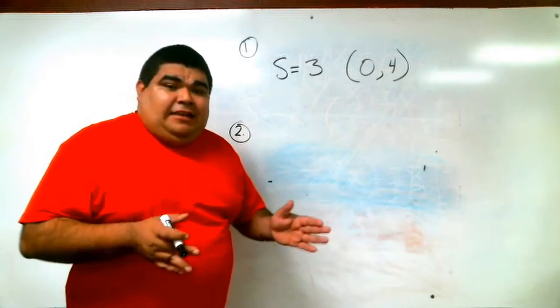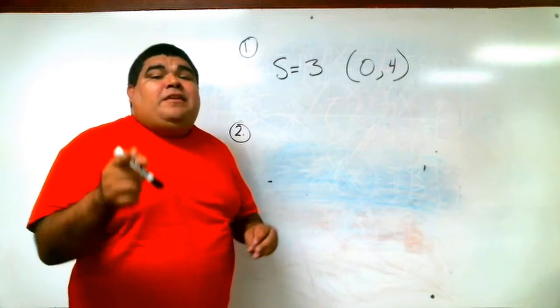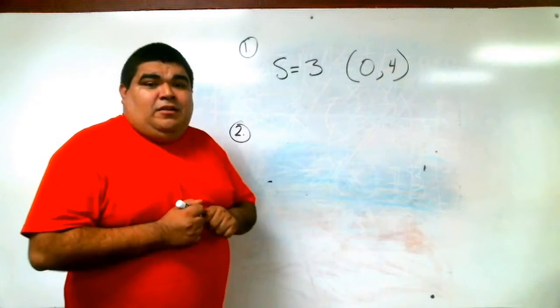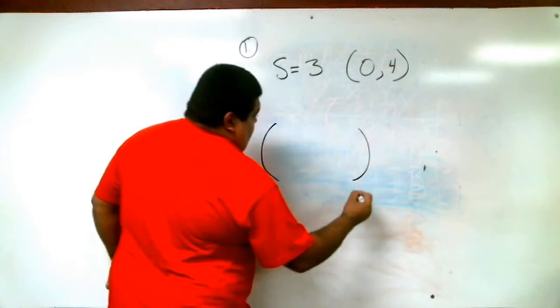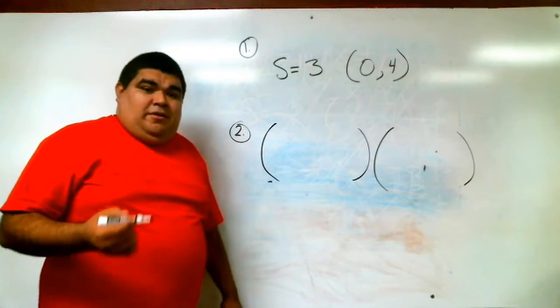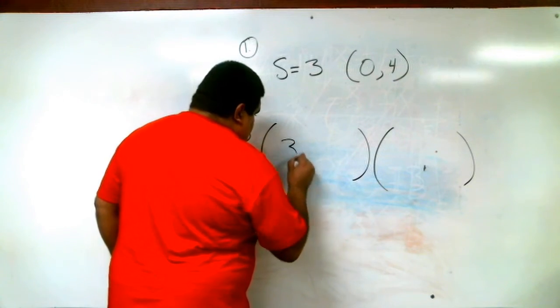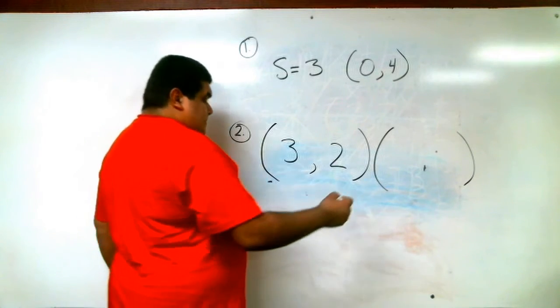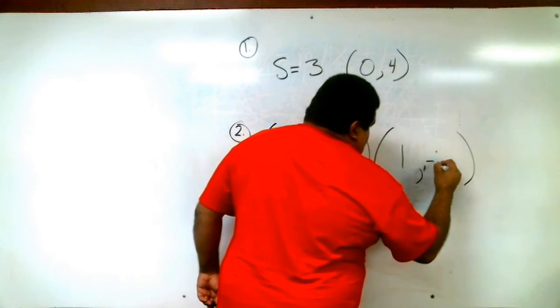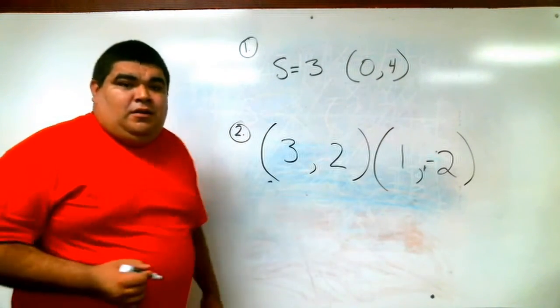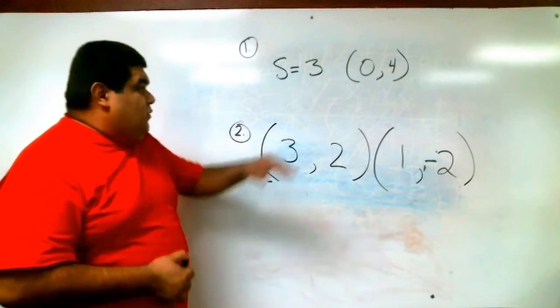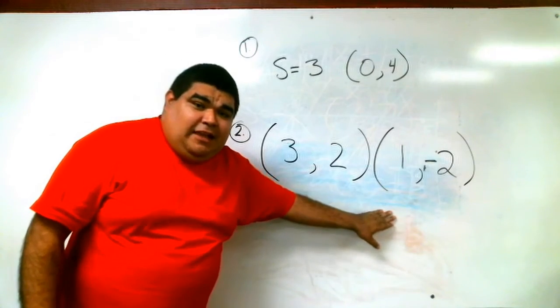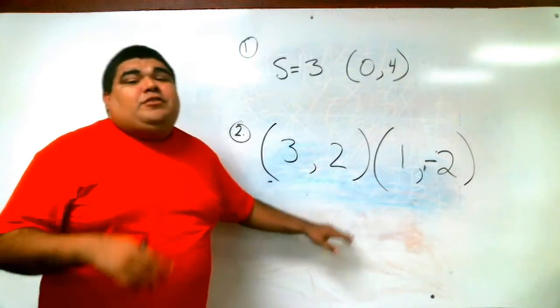For your second one, I want you to combine last class and this class together. This time I'm going to give you two coordinates to find the slope. Once you find the slope, pick one of the two coordinates to use for the second part. Your points are 3 comma 2 and your second coordinate is going to be 1 comma negative 2. So remember, the first one, the slope already found for you. This is the coordinate you're going to use. For the second one, you have to find the slope first from last class. Then you're going to pick one of the two as your coordinates with your slope. Don't forget to submit your answers.